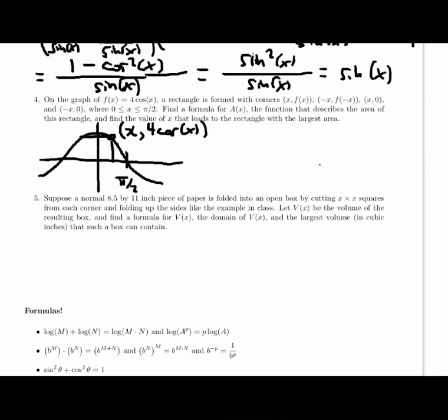So, now if I draw the rest of this rectangle in here, I can label the width of this rectangle by thinking about how far apart they are. The x-coordinate on the right is x. The x-coordinate on the other side is negative x, so the width here is 2x. And then the height of this rectangle is just given by the y-coordinate 4 cosine x.